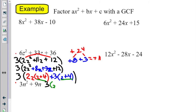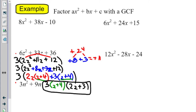Ding ding — I have z plus 4 in both of them, so I can take z plus 4 out of the whole thing. When I do that, I'm left with 2z in the first group and plus 3 in my blue group. So you look for that number you can take out of the whole thing, don't lose track of it, but then the rest of the process is all the same.